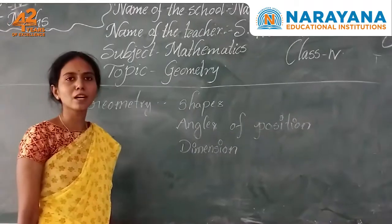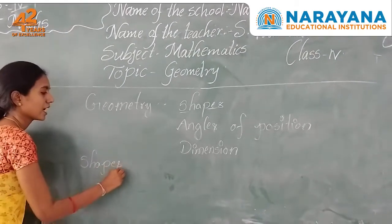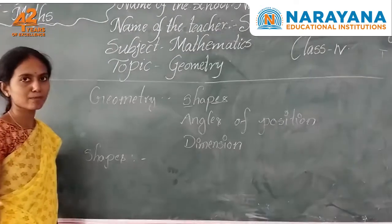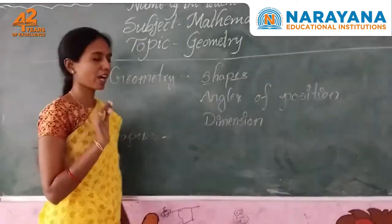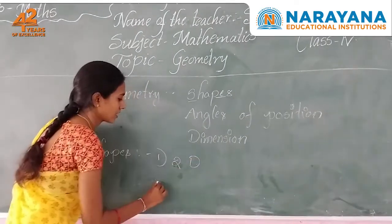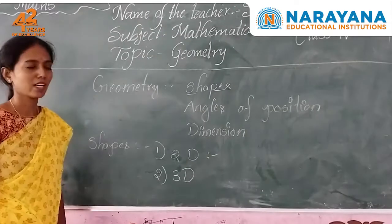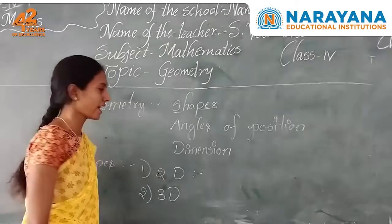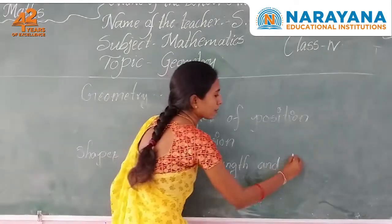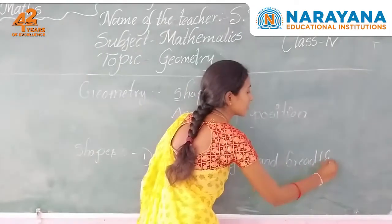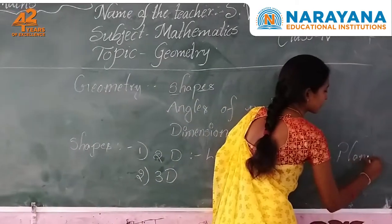First, we discuss about the shapes. Shapes — we have different types. We have 2D and 3D shapes. The first one is 2D and the second one is 3D. 2D shapes have two dimensions: length and width. They are called plane figures.